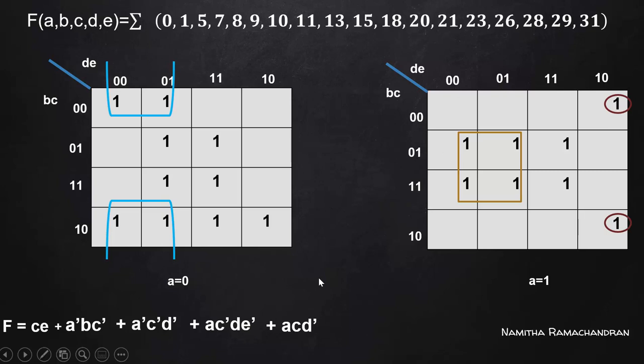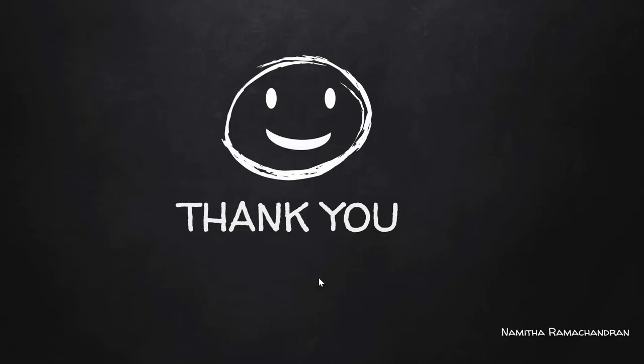This is the case of simplification of SOP form using a 5-variable KMAP. Thank you.